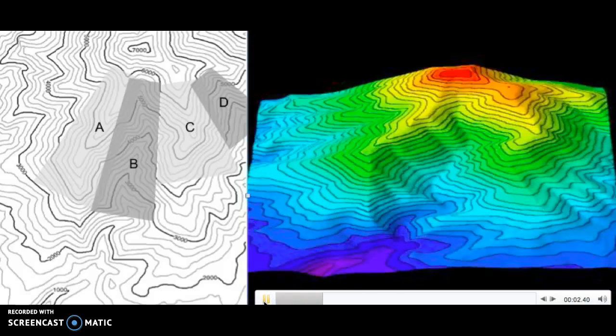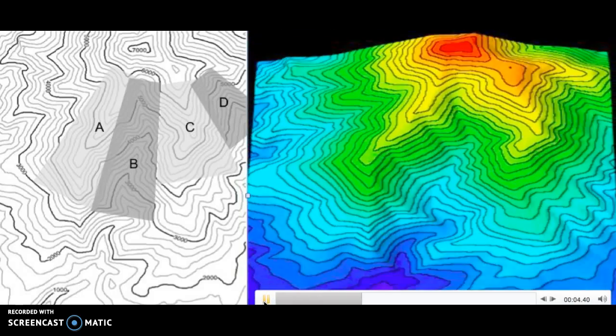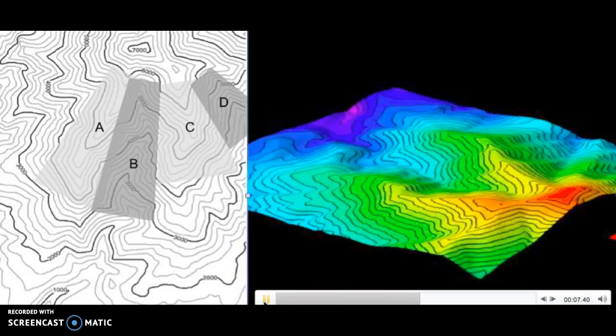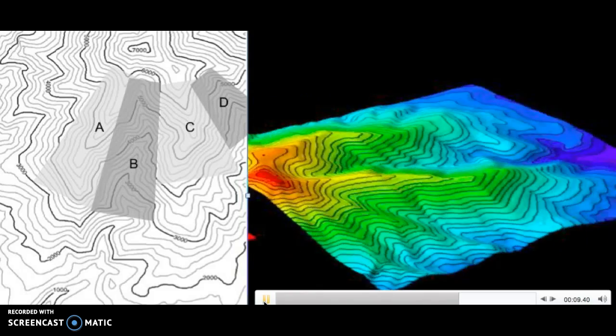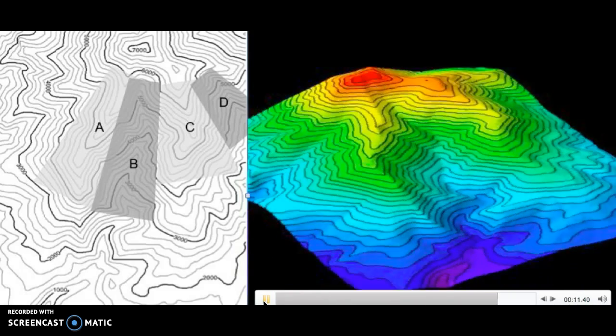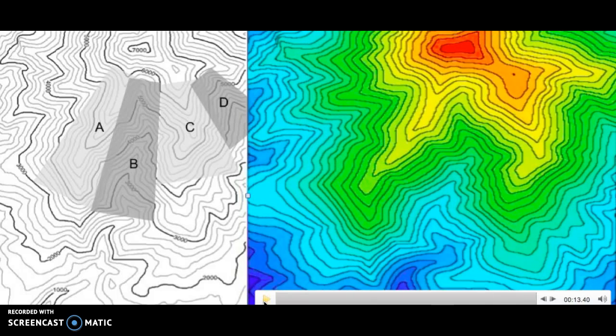The maps in this image show one of the peaks of the Henry Mountains in the state of Utah. The peak has an elevation of over 7,000 feet and forms multiple ridges and valleys. Can you tell which portions of the map form ridges or valleys?